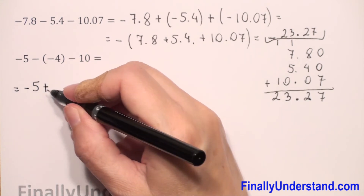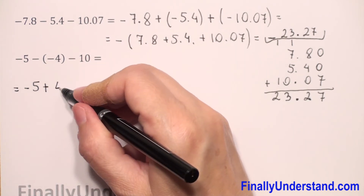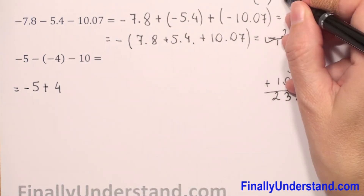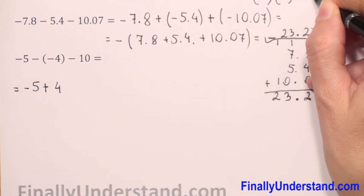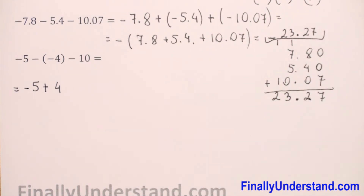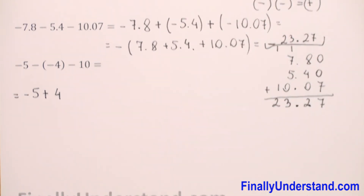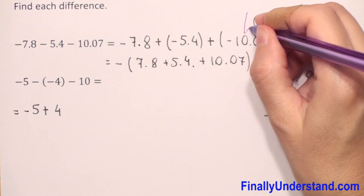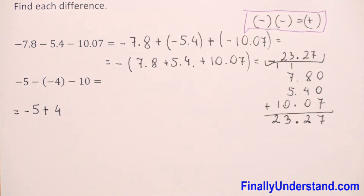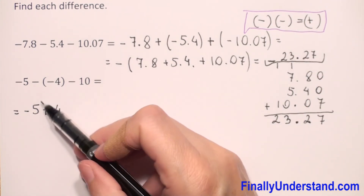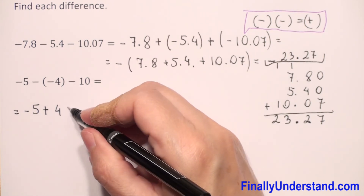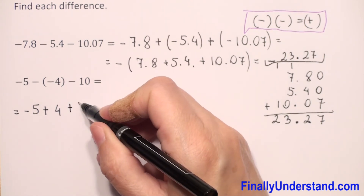Subtraction changes to addition; the opposite of negative four is positive four. Remember: negative and negative always gives you positive. This rule we have to memorize — it's very easy: negative and negative make one positive sign.